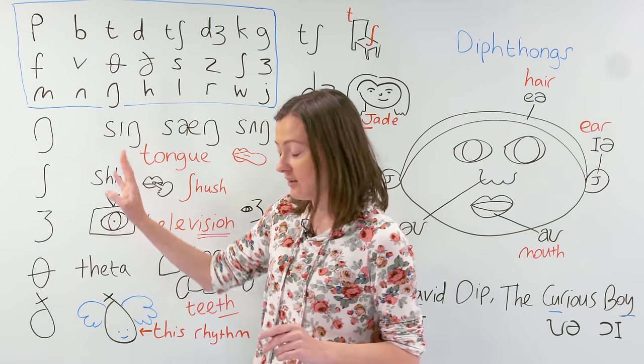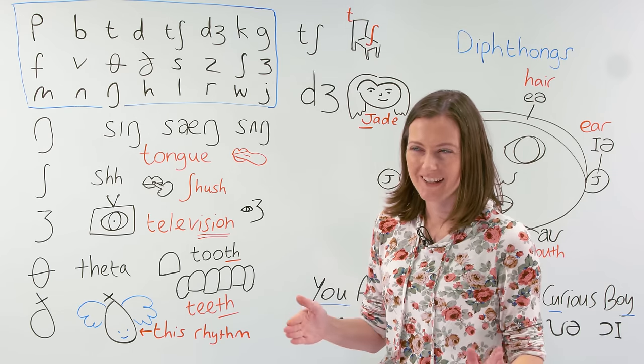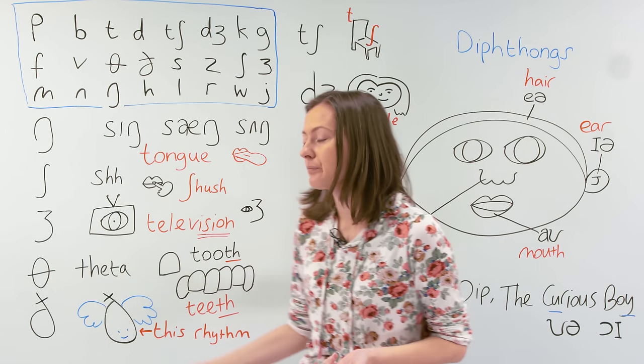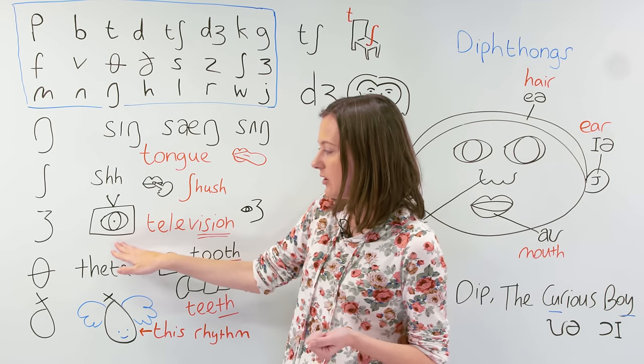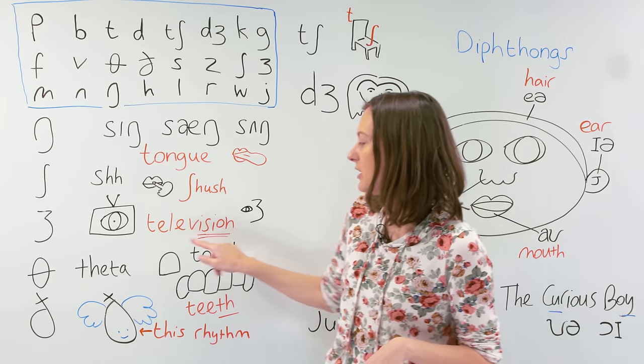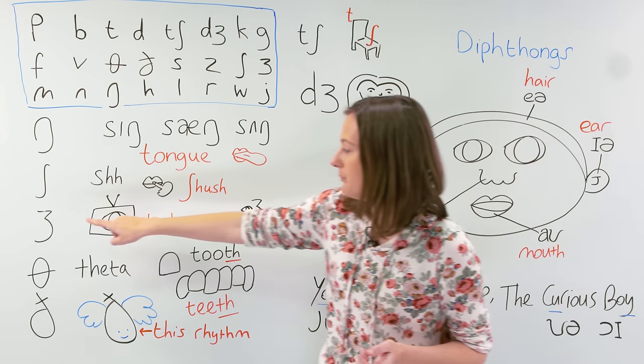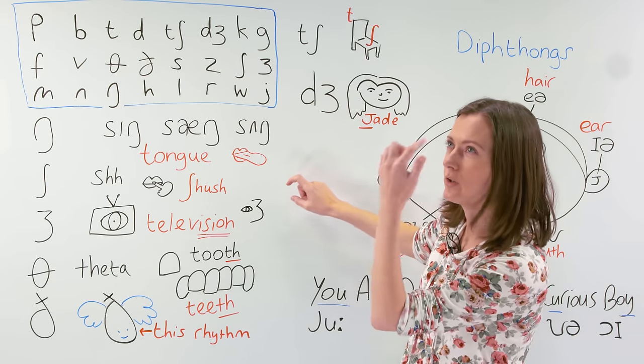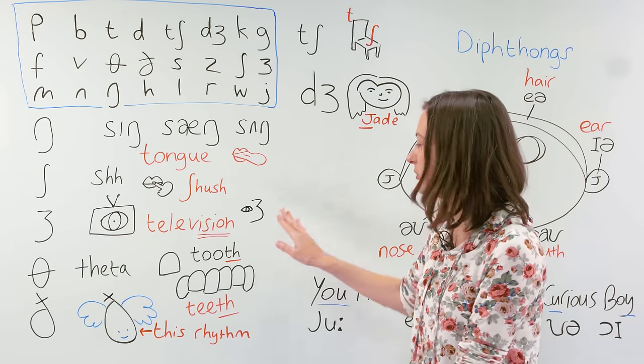Next we have the phoneme ʒ. This is a hard one to remember, but actually it's not in so many common words. It's in the word television. I've shown it by a TV symbol with an eye inside - this is the vision part. Television. I also show it here to help us remember the symbol. The shape is a little bit like a 3, and the way I've drawn it is kind of like a nose and a mouth in a cartoon style. We have the vision there as well.